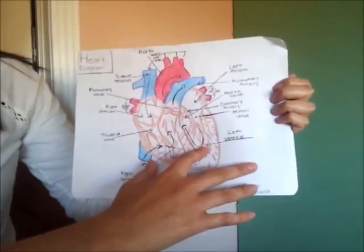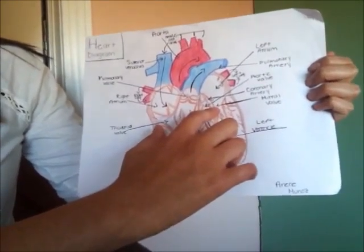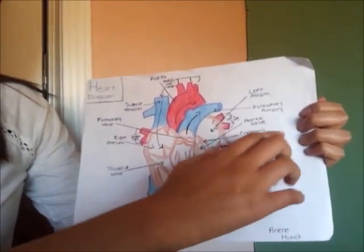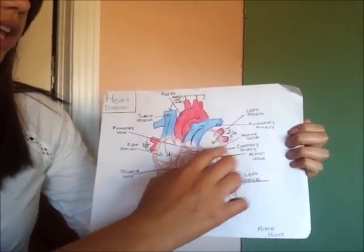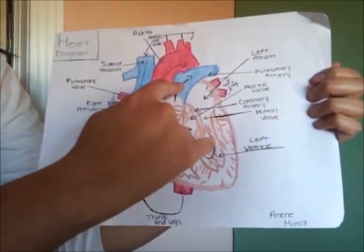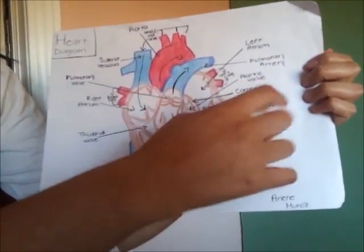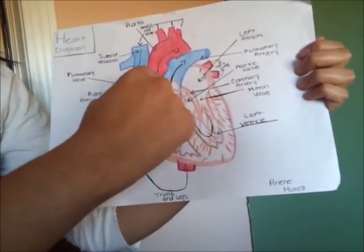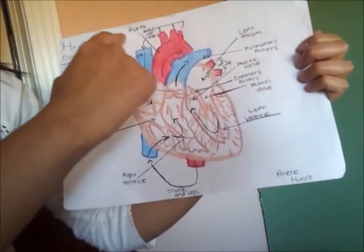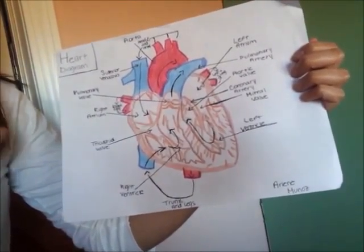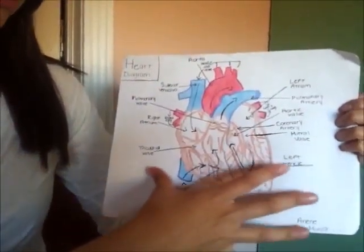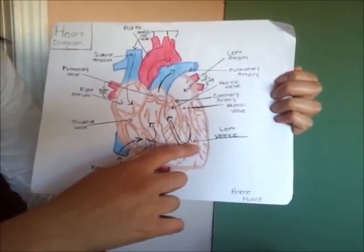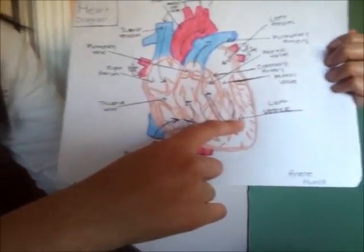Here is the left ventricle, and then right here is the mitral valve, and then right here will be the coronary artery. Right here will be the aortic valve, and then here this blue vein is the pulmonary artery, and then right here is the left atrium. This big vein is the aorta, and it's the thickest wall of the heart. All these are labeled, and here are the arrows clearly pointing to them.